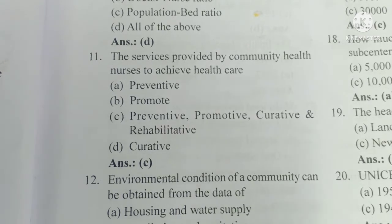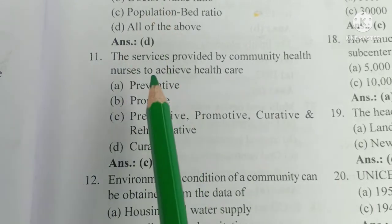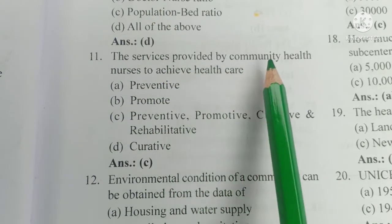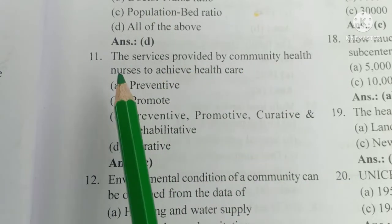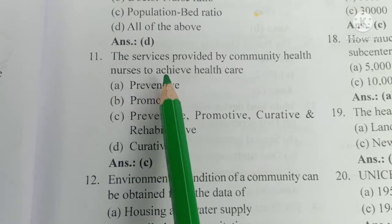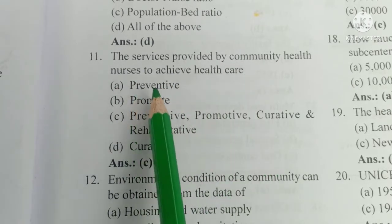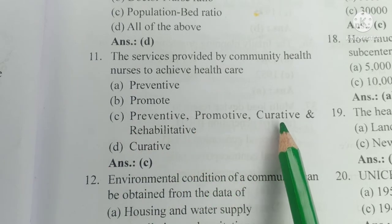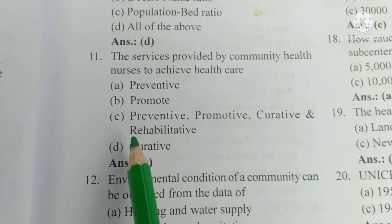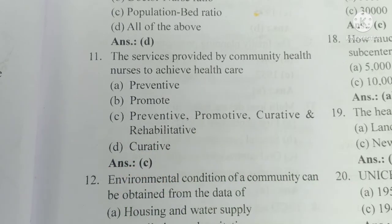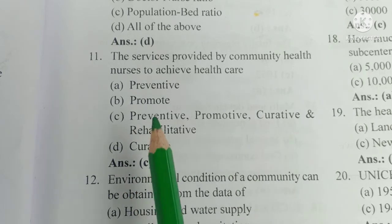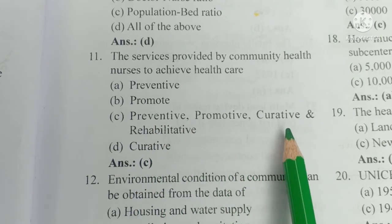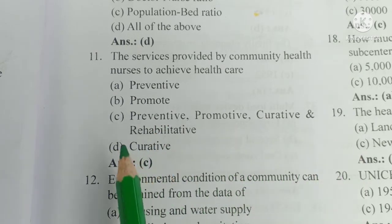Question number 11. The services provided by community health nurses to achieve health care are: A) preventive, B) promotive, C) preventive, promotive, curative and rehabilitative, D) curative. The answer is C — preventive, promotive, curative and rehabilitative.